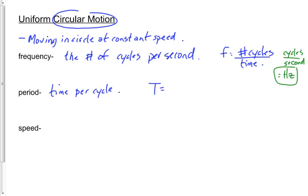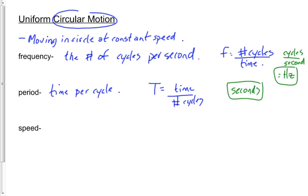The equation for period is just flipped from frequency: T equals time over number of cycles. The units are seconds — you could say seconds per revolution, but usually just seconds. There's no special unit name for period like there is for frequency. Period can be measured in hours, days, or even years, but the standard unit is seconds.